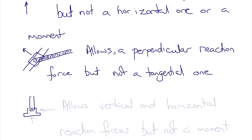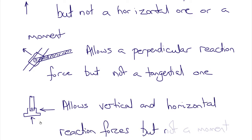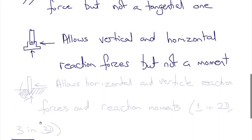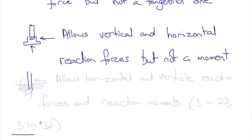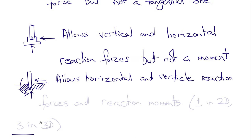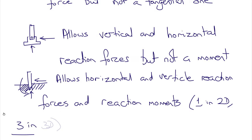If the bar is pinned to a fixed support, then in 2D there will be a vertical reaction force and a horizontal reaction force, but no moment reaction, because the bar can rotate about the pin. If the support is fully fixed and clamped, this allows for a horizontal and a vertical reaction force and a reaction moment — so three reactions in 2D, or six in 3D; one reaction moment in 2D, three reaction moments in 3D.